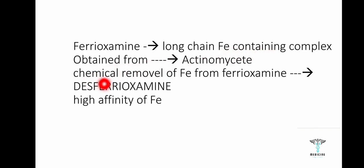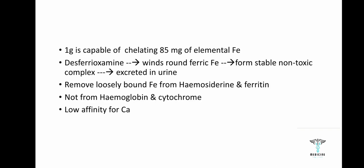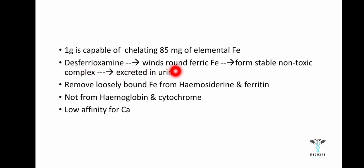Desferoxamine is produced by the chemical removal of ferrioxamine. It has a high affinity for iron — one gram is capable of chelating 85 milligrams of elemental iron.